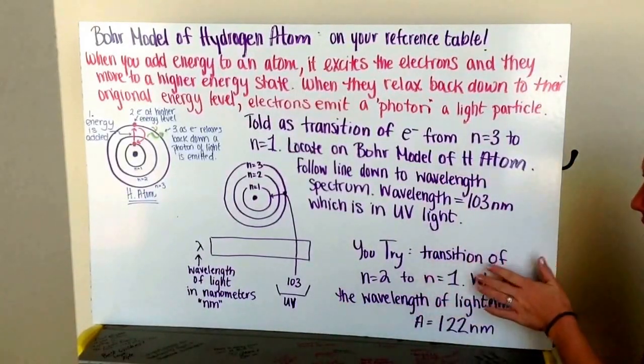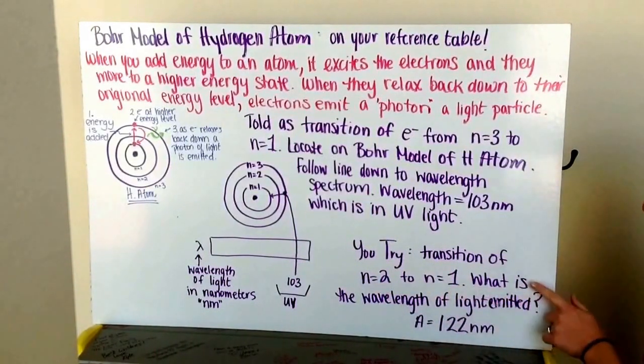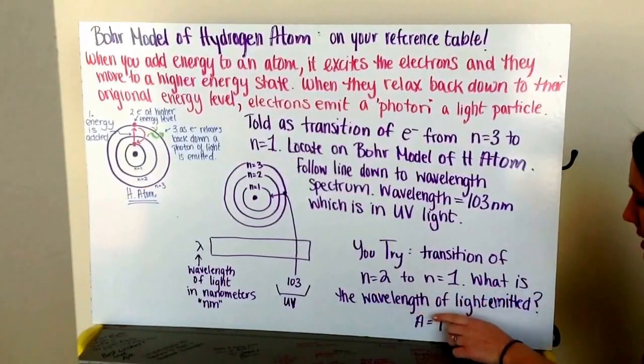Go ahead and try the transition of n equals two to n equals one. You want to determine what is the wavelength of light emitted by this transition.